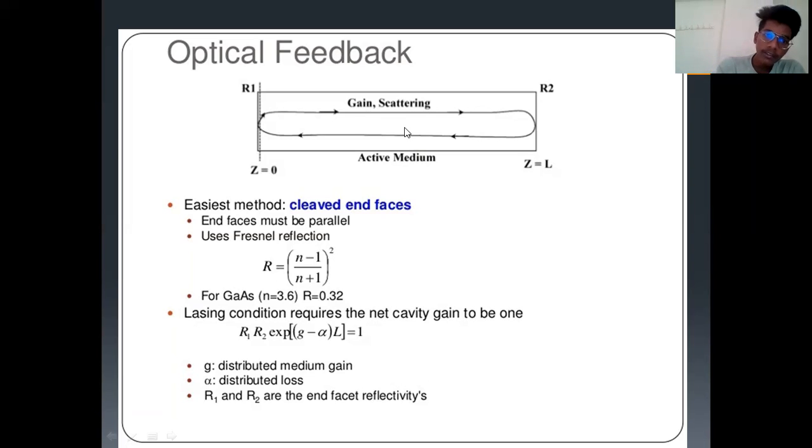Coming to the diagram, here we have R1, we have R2. The gain is scattering in the active medium. The light coming from this side reflects to this side and passes through. The partially reflected mirror will emit the laser light.